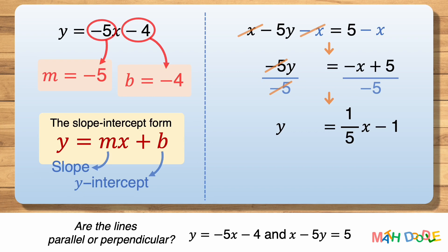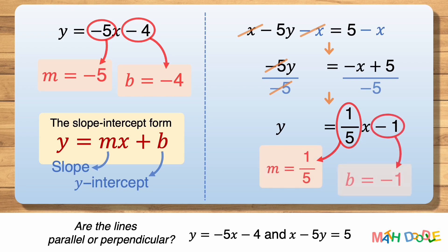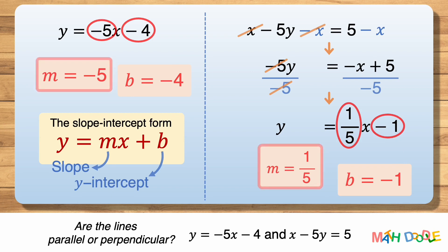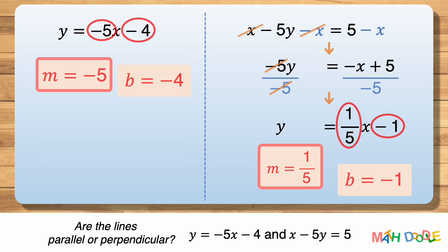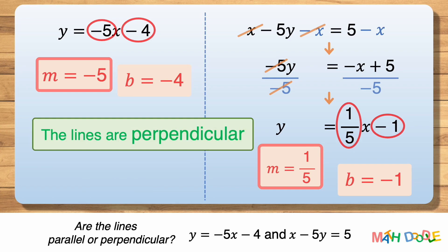By comparing this with the slope-intercept form, we can see that the line has a slope of one fifth and a y-intercept of minus one. Now let's look at the slopes of the two lines. If we multiply minus five and one fifth, their product is minus one. This means that their slopes are negative reciprocals of each other, which tells us that the two lines are perpendicular.